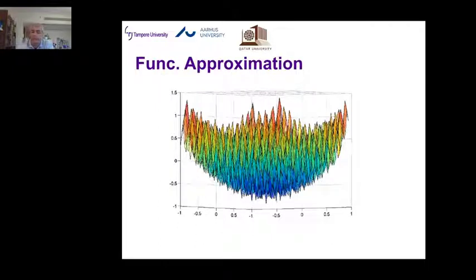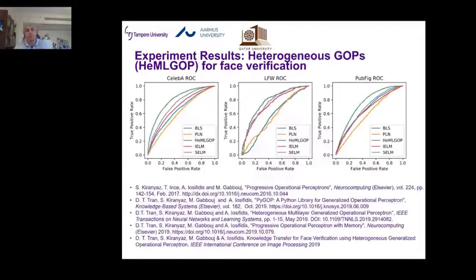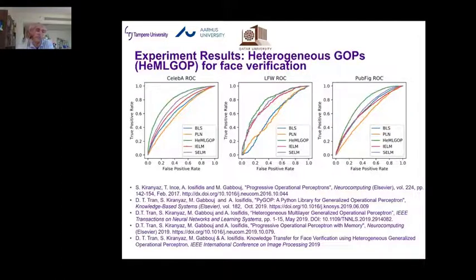You cannot actually compare multilayer perceptrons and GOPs in many problems — one gives totally zero percent and the other gives 100 percent. We also compared against more recent variants called extreme learning machines. The green curve shows our GOP, tested on numerous public benchmark datasets, and GOPs beat extreme learning machines by a very wide margin.